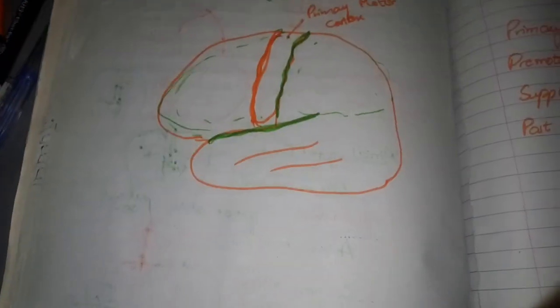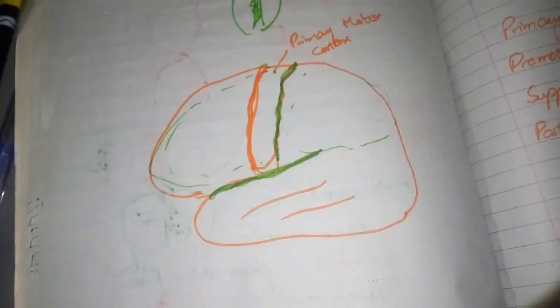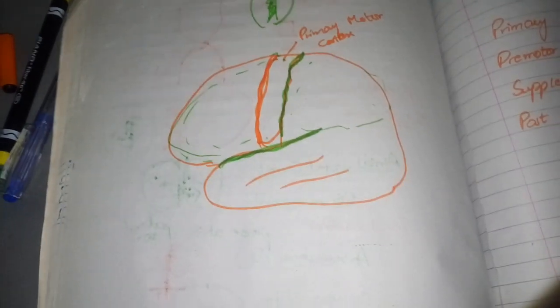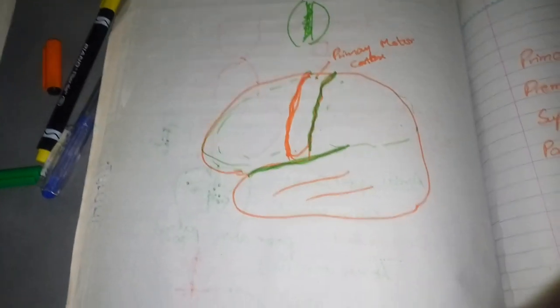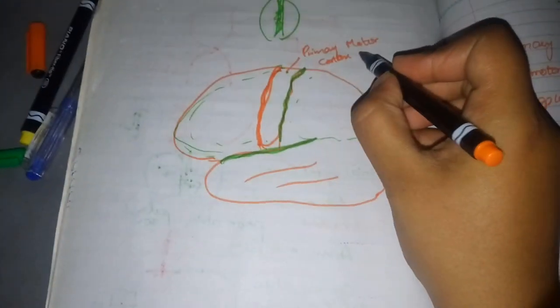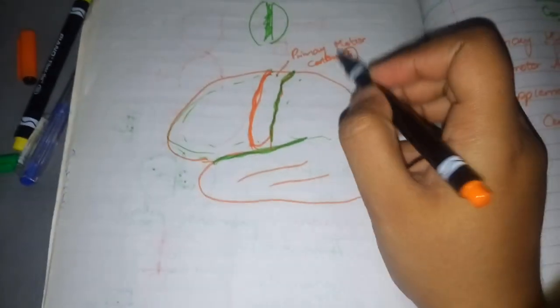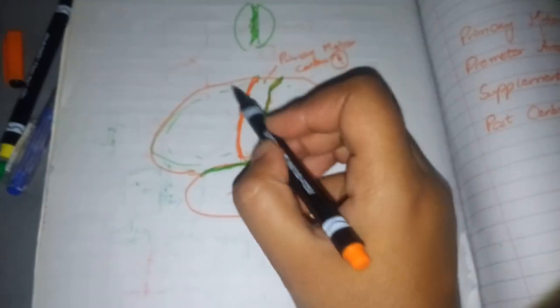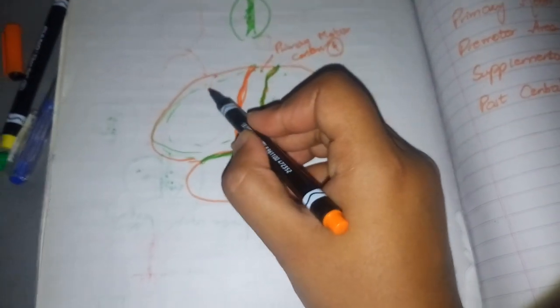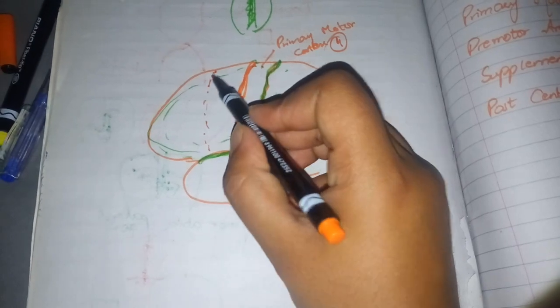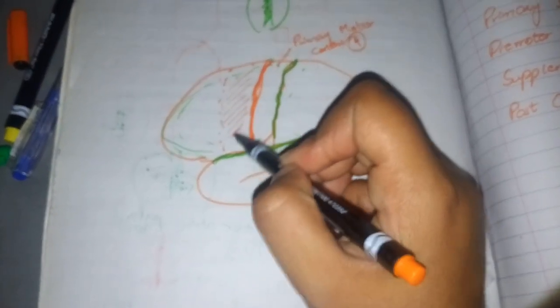Broadman was a scientist who classified the brain into different areas with numbers. This classification continues to appear in MCQs. The primary motor cortex is Broadman area 4, an important area to remember. The next portion is known as pre-motor cortex.